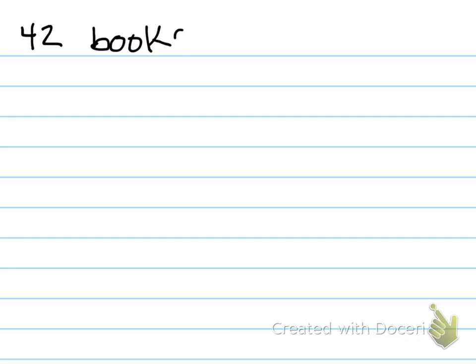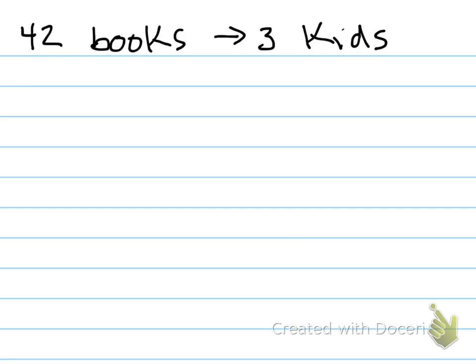Let's say we, as a class, had 42 books on the book order from Scholastic, and they were putting even groups to three kids. So all 42 of these books, we're going to make three even stacks and give them to three kids. Let's first use our Base 10 model pictures to model our dividend to figure out how many books each kid is going to get. So 42 books would be drawn as four lines and two dots.